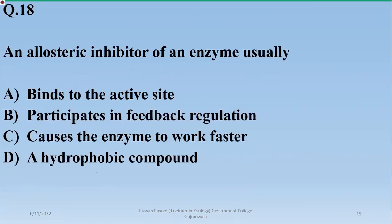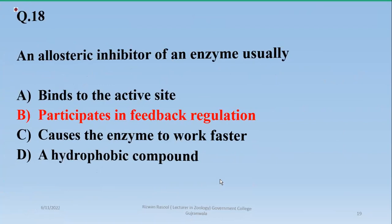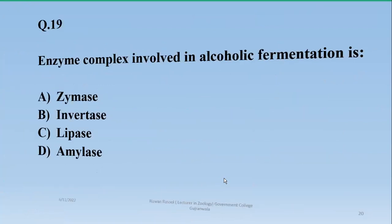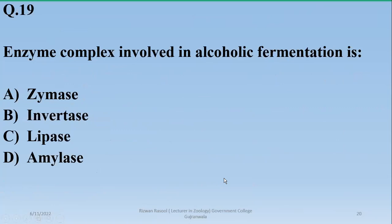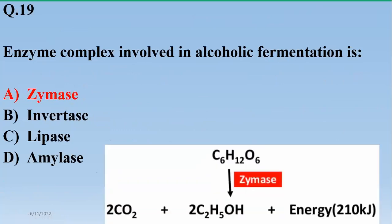Number eighteen: an allosteric inhibitor of an enzyme usually binds to a site other than the active site and participates in feedback regulation — so beta is the right option. Number nineteen: the enzyme complex involved in alcoholic fermentation is zymase.